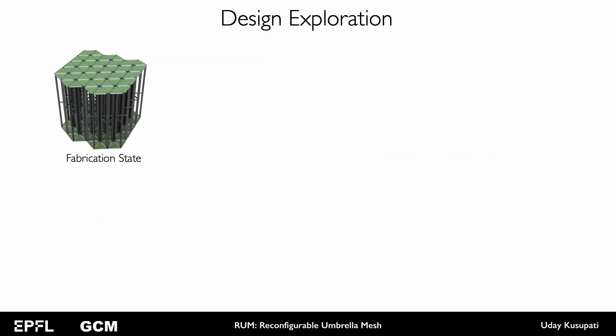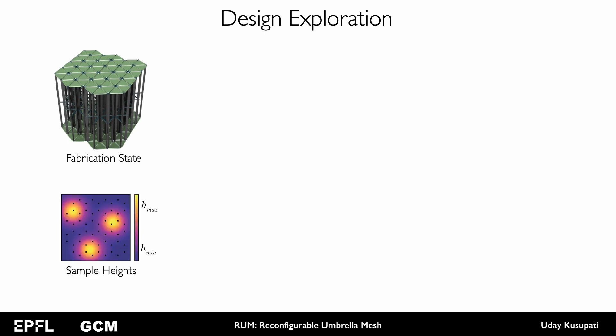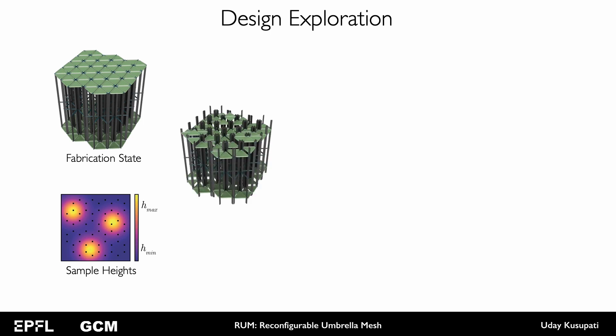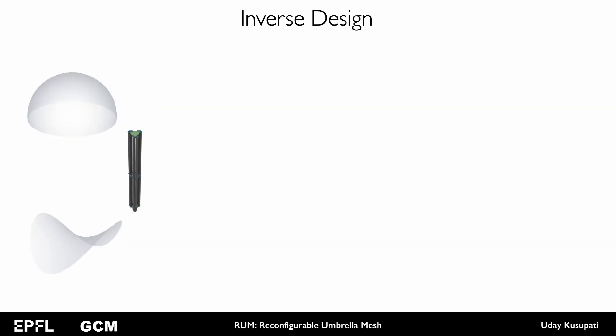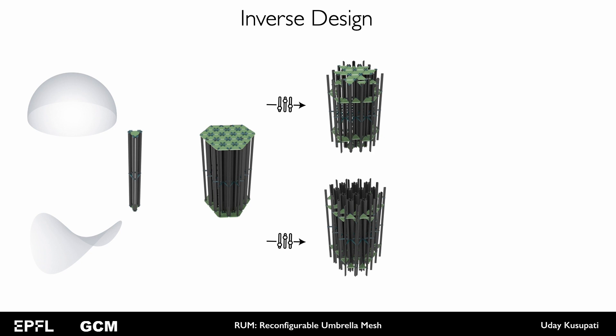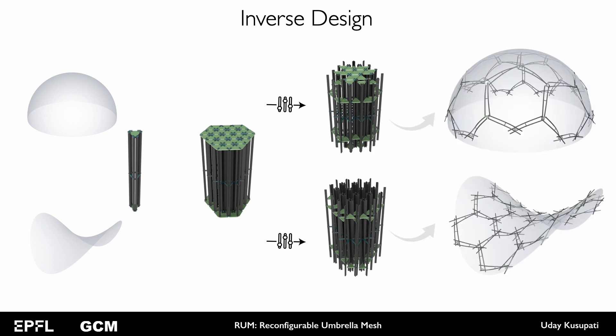We can explore the design space or configuration space of a RUM by sampling the heights of the cells. Here we have a heat map of the spatial distribution of heights. This can be understood as how we want the local expansion factors on the surface to be. We use this to initialize the height configuration of the RUM. We use our physics-based simulation framework to find the deployed elastic equilibrium. This enables interactive design exploration by quickly finding the deployed shape for each sample configuration. Given desired target shapes and the cell geometry that is available, our inverse design algorithm computes the topology to be assembled and the height distribution for each configuration. The computed configurations deploy into desired target shapes.